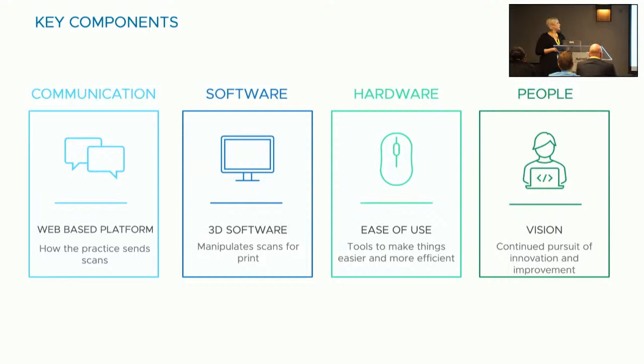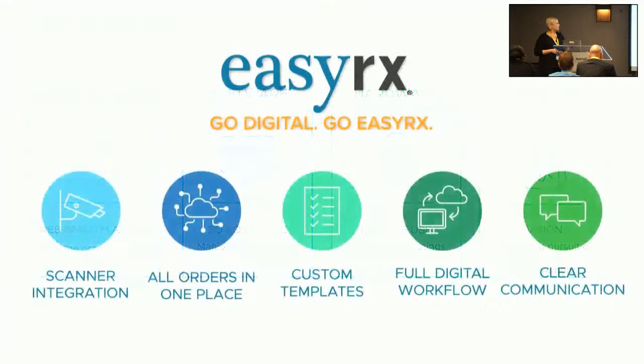To be successful, you need four things. First, communication—for us that's EasyRx, where the doctor sends scans and tells us what they need. Second, 3D software to work with your models—whatever you're going to do with them, base them and print them. Third, hardware—a computer and other tools to make techs more efficient. And most importantly, people. The right people will take those other three things and make you more innovative.